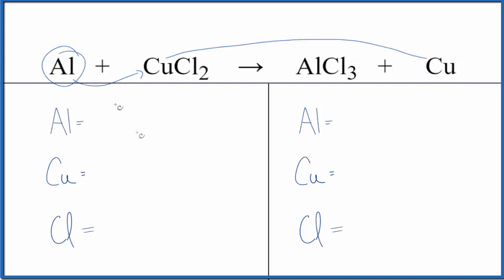Let's balance the equation. On the reactant side: one aluminum, one copper, and two chlorine atoms. On the product side: one aluminum, one copper, and three chlorine atoms.